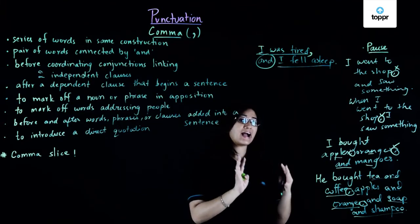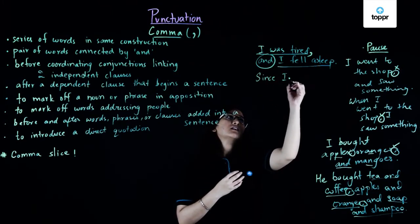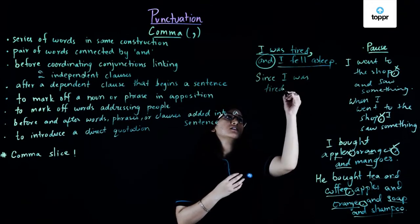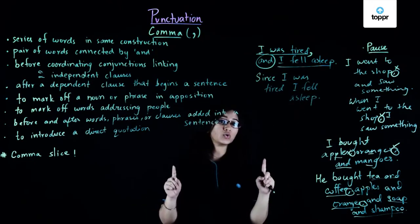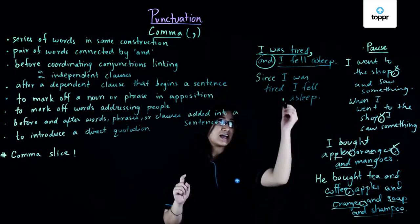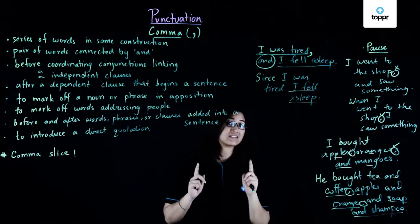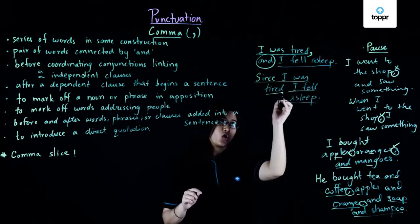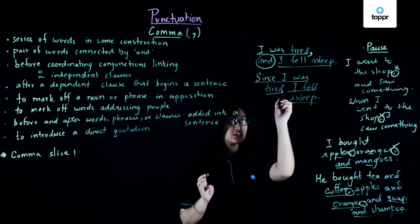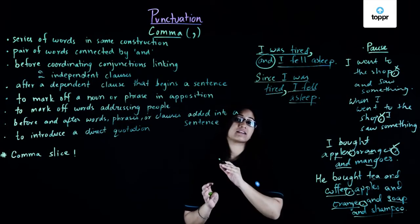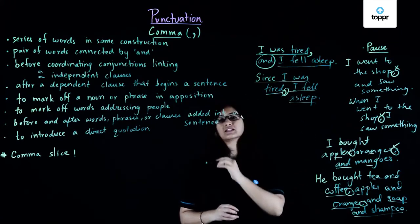What if I had a slightly different form of this sentence? Had I said: 'Since I was tired, I fell asleep.' In this statement I do not have two independent clauses. Instead, I have one independent clause — 'I fell asleep' — and a subordinate or dependent clause. Whenever you start a sentence with a dependent clause, you need a comma after it to separate that subordinate clause from the independent clause that comes after. So this is another place where we use the comma.